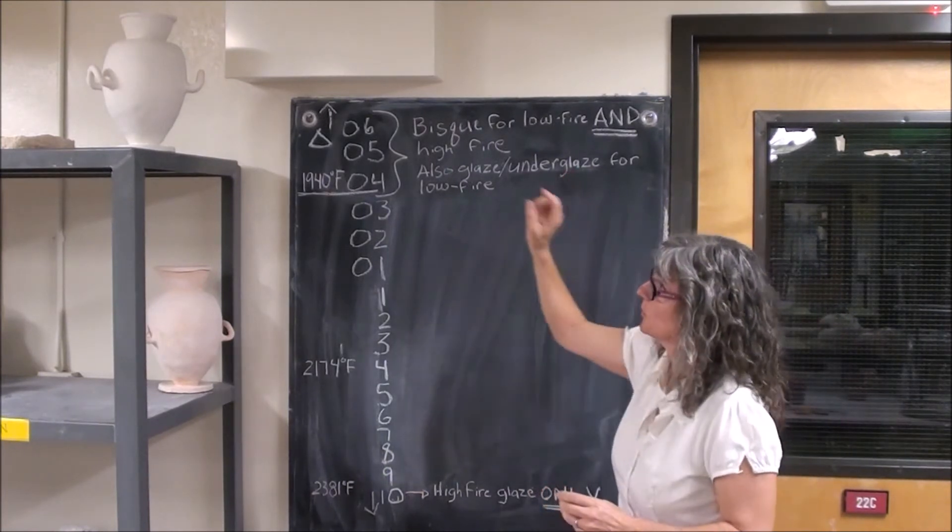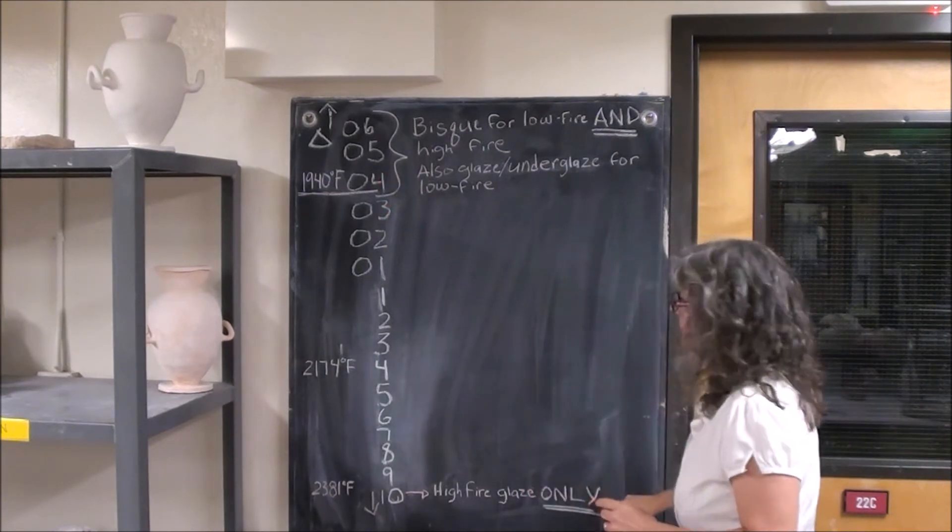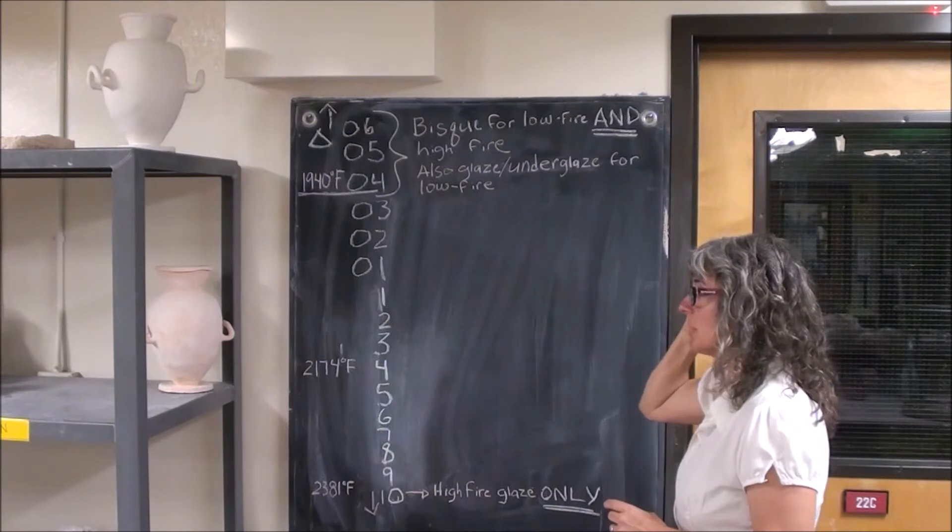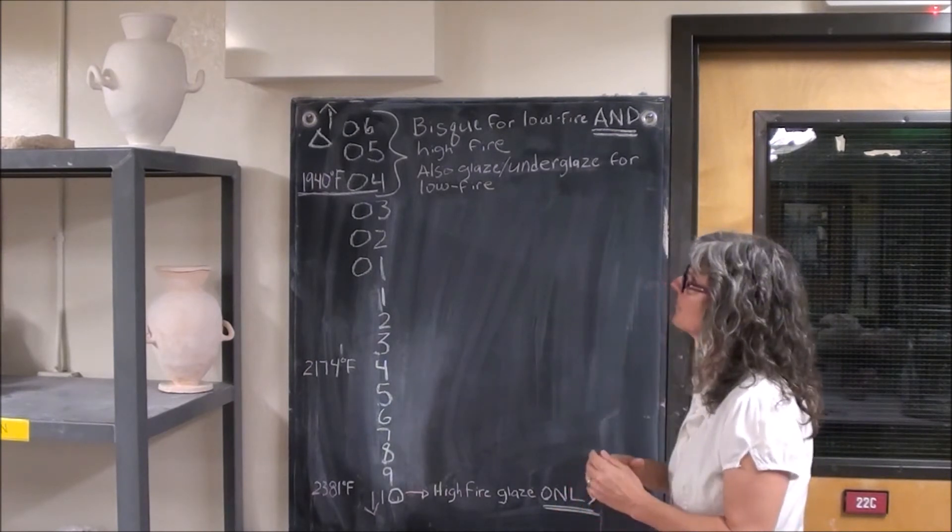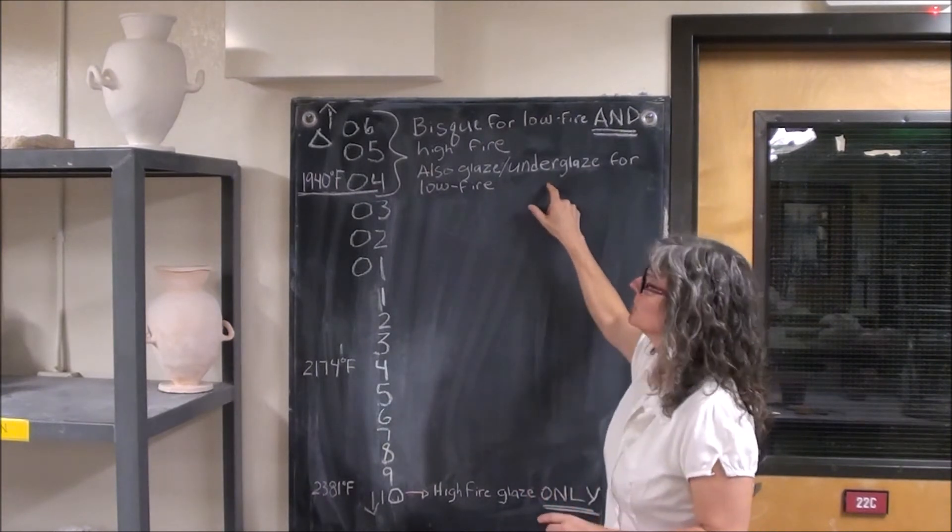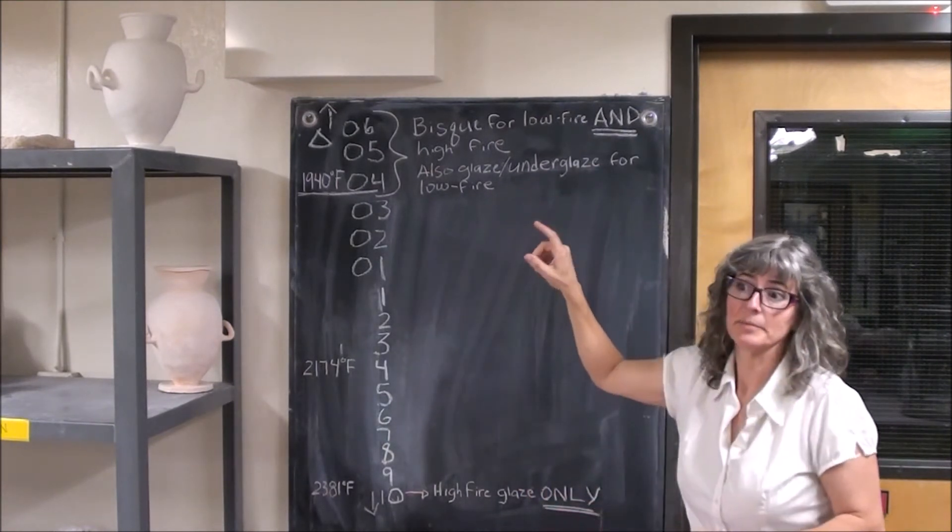Obviously we use low fire glaze for our whiteware and high fire glaze for our stoneware. Things can get a little confusing because whiteware is very inflexible. Whiteware, you have to use low fire glaze or underglaze on it and fire it at a low fire temperature.